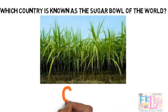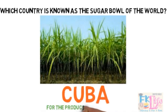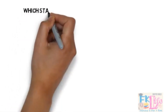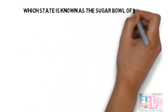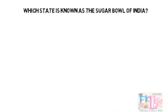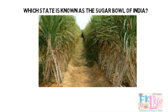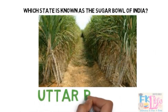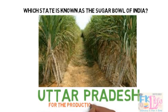Which country is known as the sugar bowl of the world? It's Cuba, for the production of sugarcane. Which state is known as the sugar bowl of India? It's Uttar Pradesh, also known for the production of sugarcane.